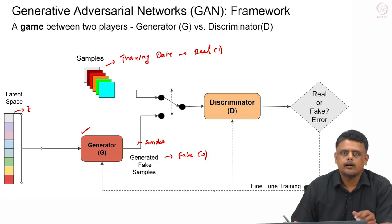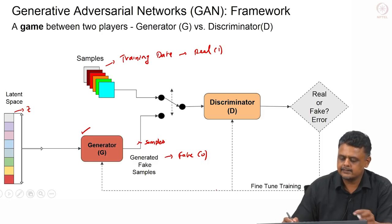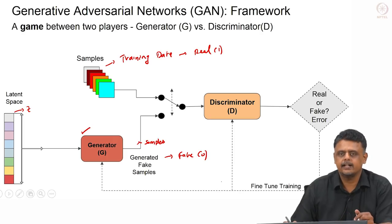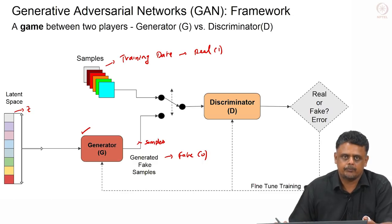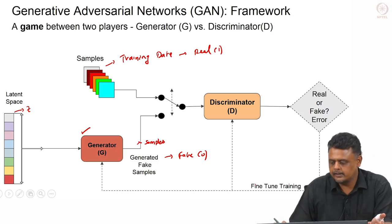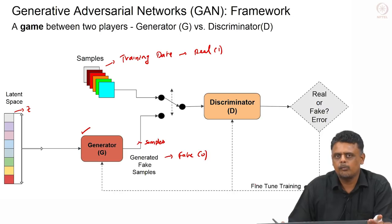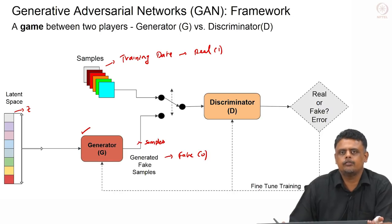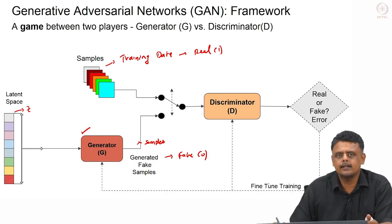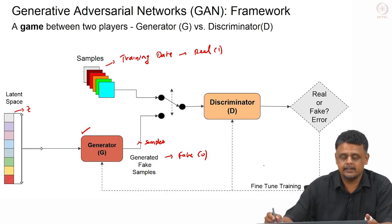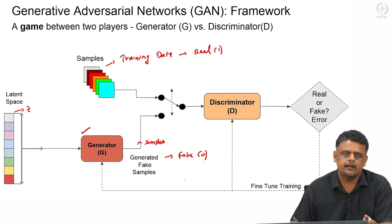The discriminator alternatively takes as input training data samples as well as generated samples, and outputs an error function — basically a probability of the particular sample being real or fake, ranging from 0 to 1. This output provides the error signal to train the weights of both the generator and the discriminator.